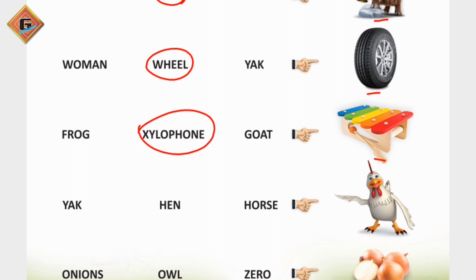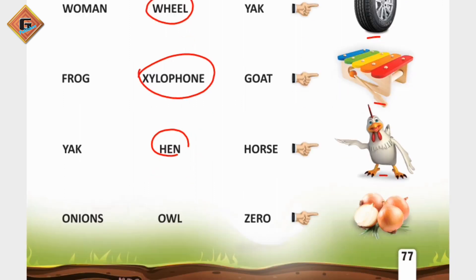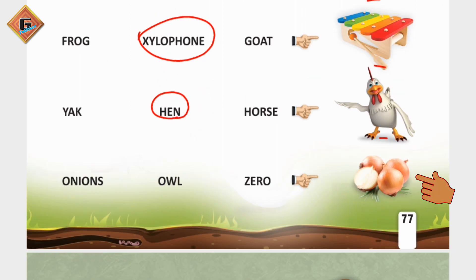Next one is hen. So the choices are: yak, hen, horse — we circle hen. And the last picture is onion. What is this? Onion! The choices are: onion, owl, zero — so we circle onion. Now let's go to the next page.